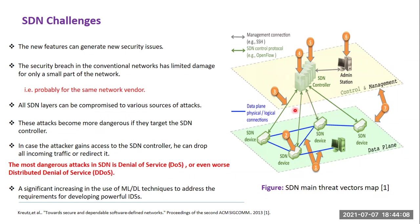For example, attacks in the communication channel between the controller and the data plane devices, or attacks on the controller itself, or in the communication between different controllers when using clustering. One of the most dangerous of these attacks is the Denial-of-Service (DoS) or Distributed Denial-of-Service (DDoS) attack, since all SDN layers can be targeted. Because of that, intelligent detection systems are very important to monitor and detect malicious traffic before it can overwhelm the whole network.